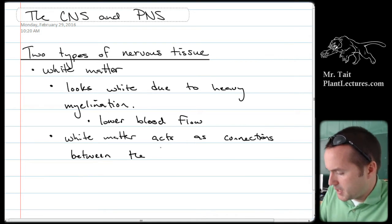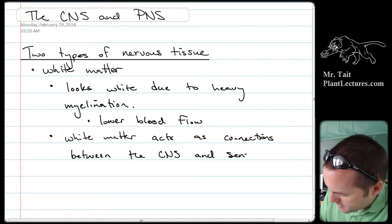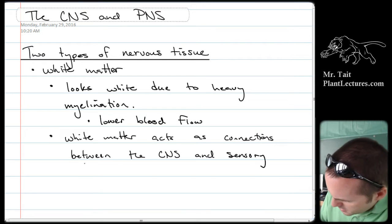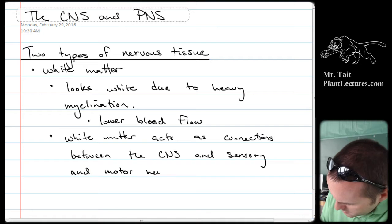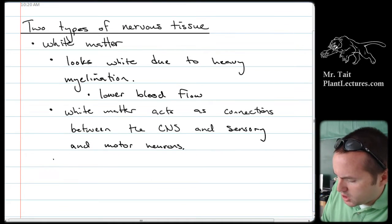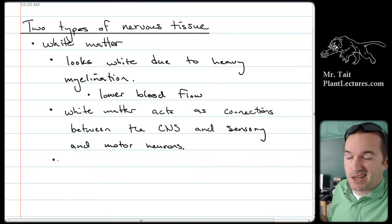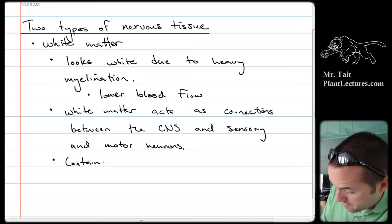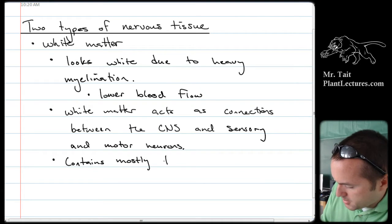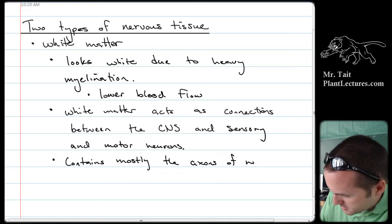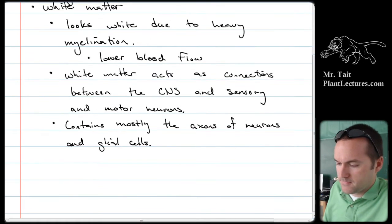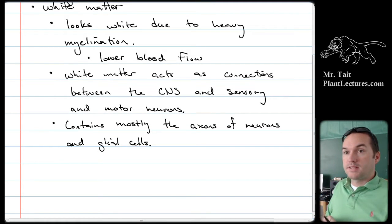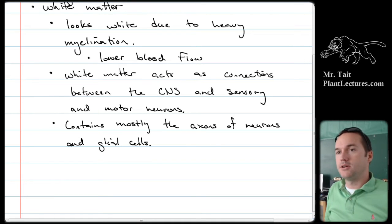White matter acts as connections between the Central Nervous System and the sensory and motor neurons. Because it's heavily myelinated, it's generally going to contain mostly glial cells — which are non-neuron cells — and also the axons of neurons. It contains mostly the axons of neurons and glial cells. Some axons are really long, so if it's mostly just bundled-up axons, it'll just be white matter.